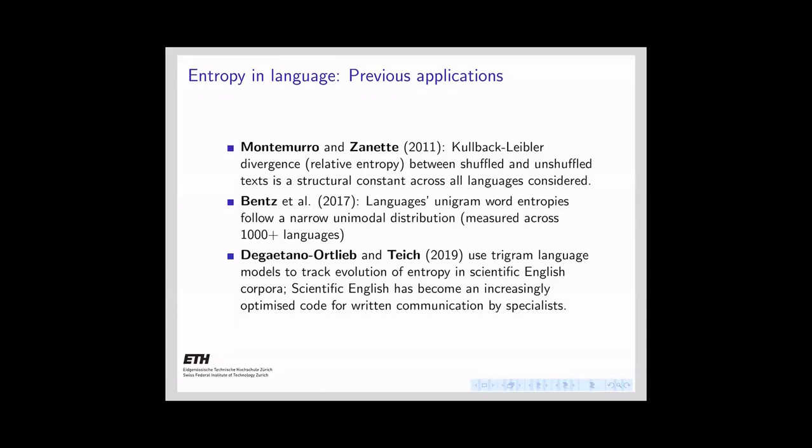Essentially, you take a text, compress it, take a shuffled version where the word order is reordered, compress it again, then compare the figures. Bentz et al. considered unigram word entropies and showed they follow a unimodal distribution measured across more than 1,000 languages. De Gaetano, Ortlieb, and Teich used trigram language models to track evolution of entropy in scientific English corpora, showing it became increasingly optimized as a code for written communication by specialists.